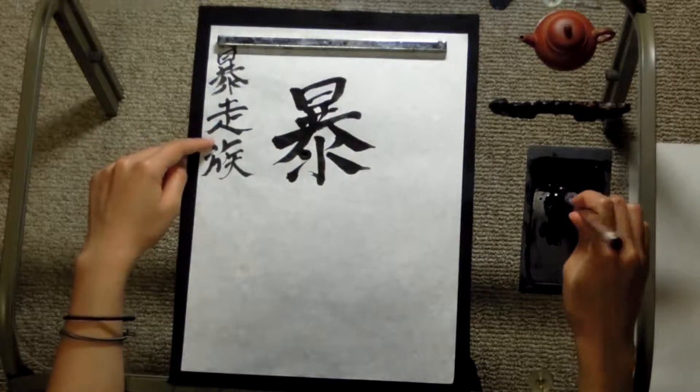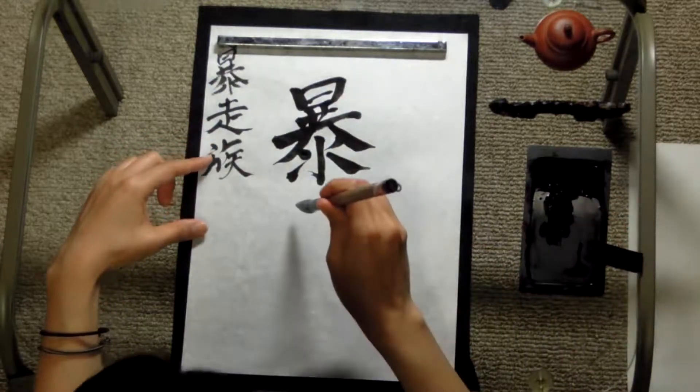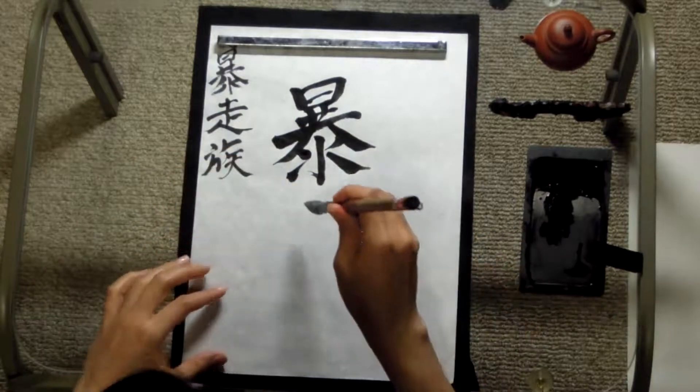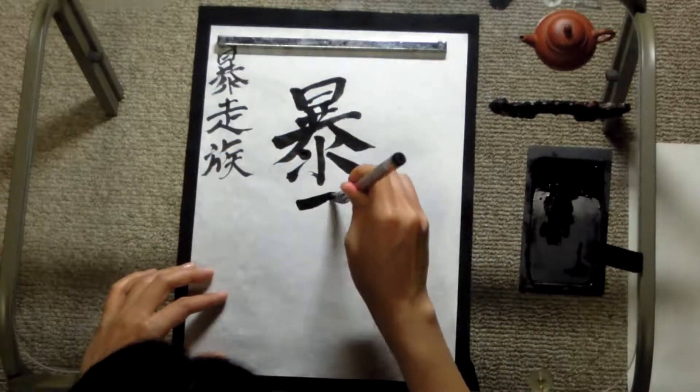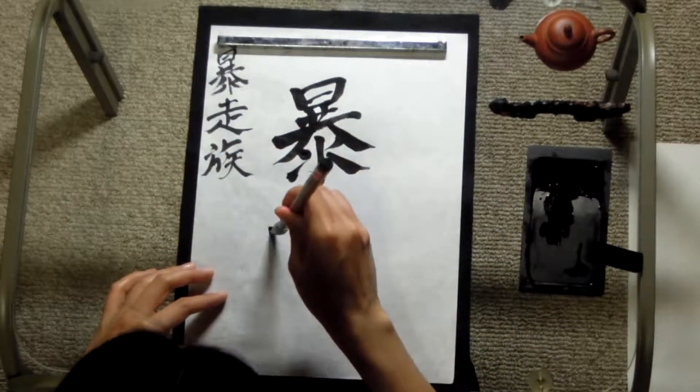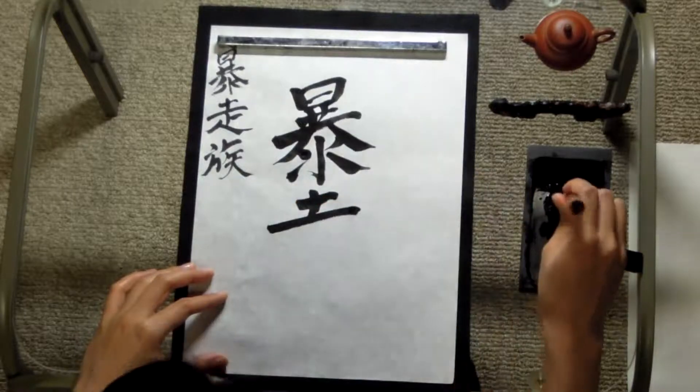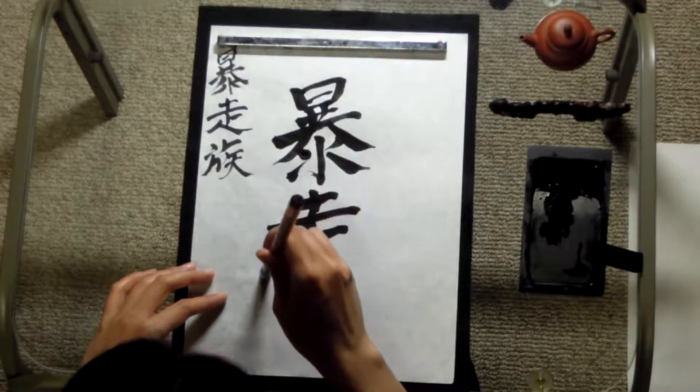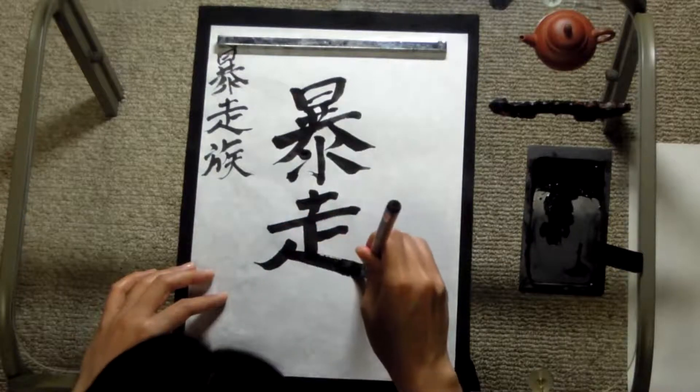So, 走る, it's run, run. Do I have space? 走る走る走る, one, two, three, four, five, six, seven, 走る.